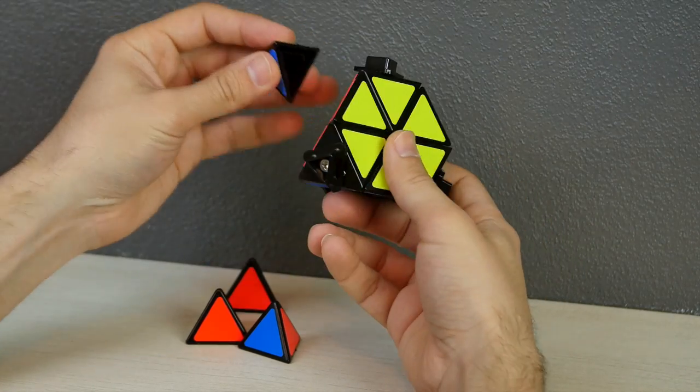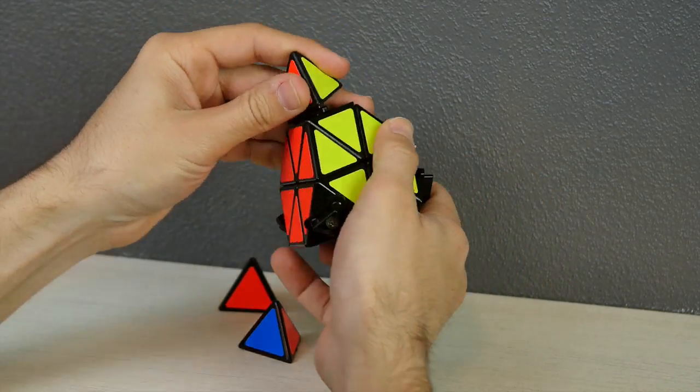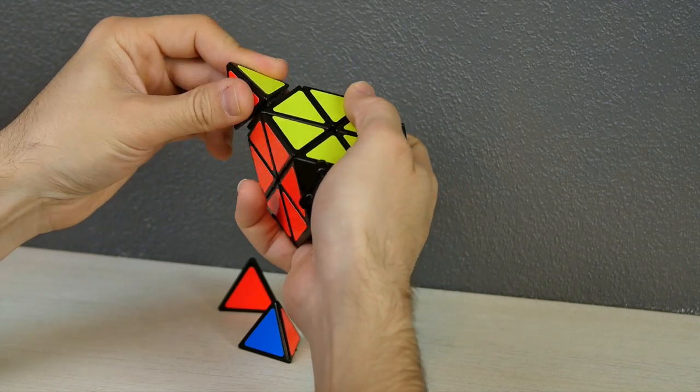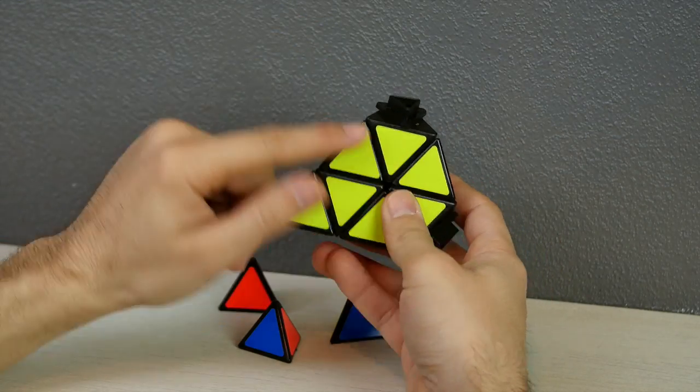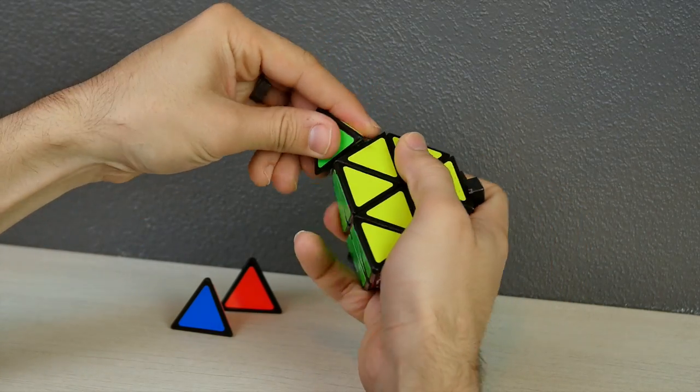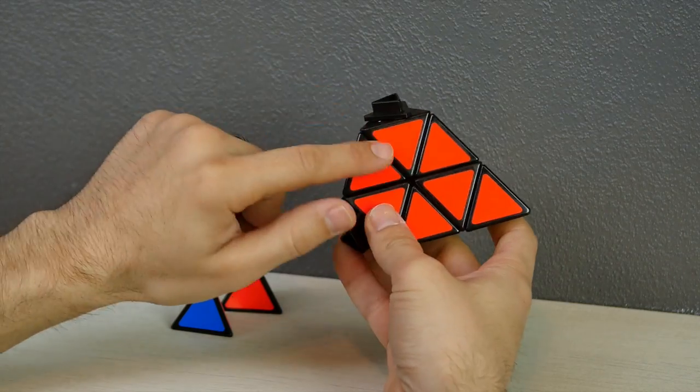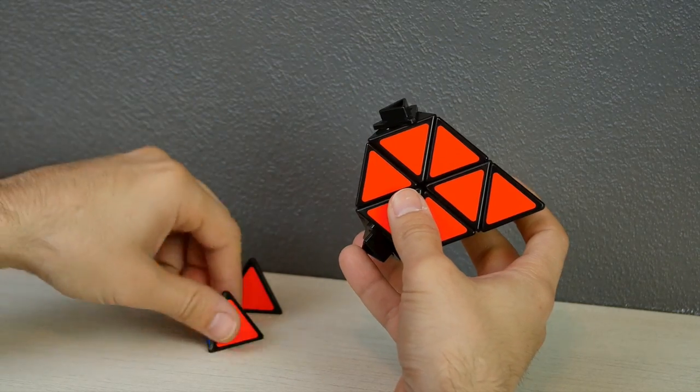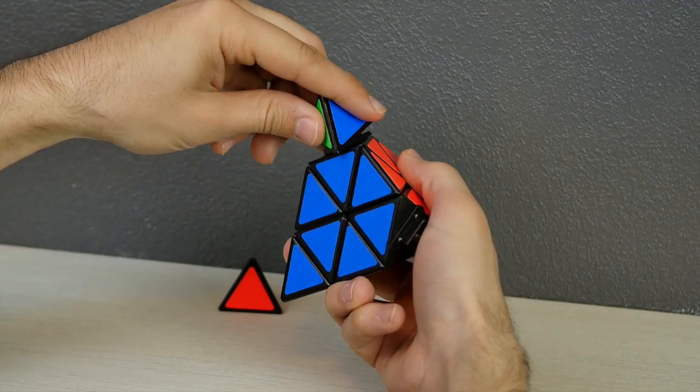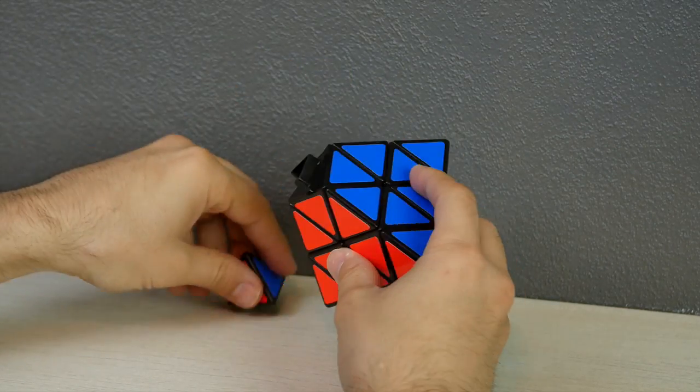Red, yellow, green. Red, yellow, green. Yellow, green, blue. Yellow, green, blue. Now we have red, blue, and green. And then yellow, red, blue.